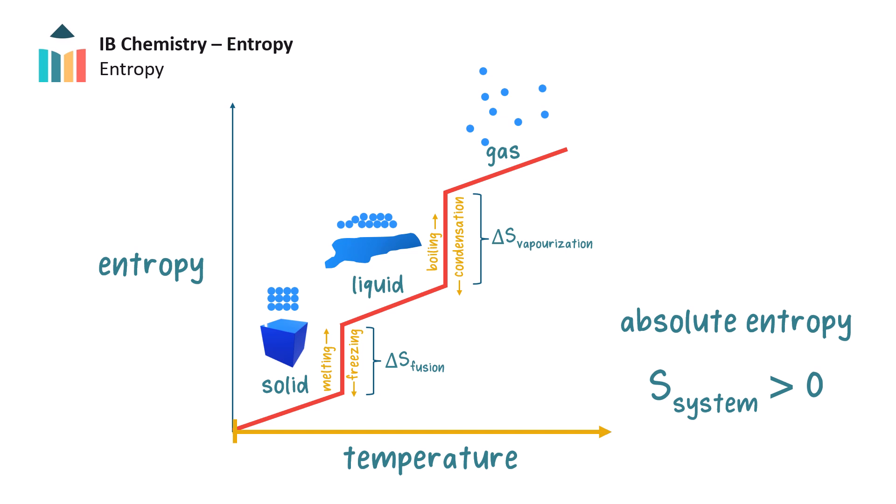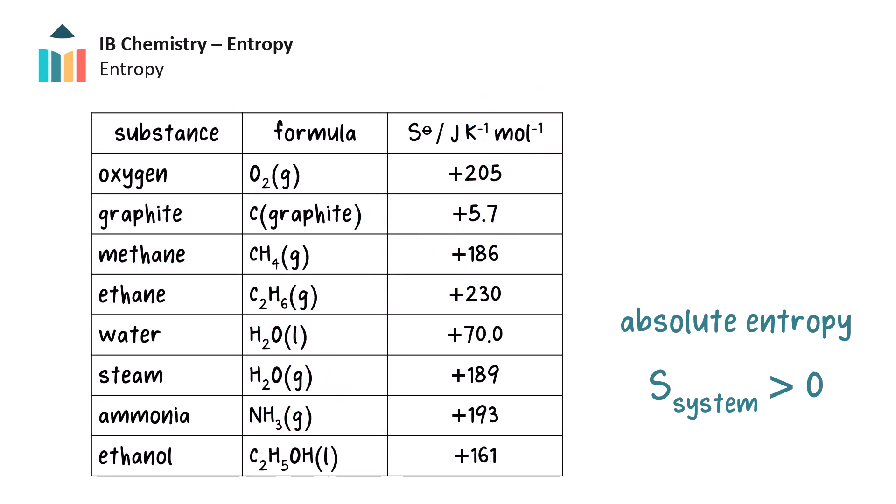Standard absolute entropy values of various substances, that is, the molar entropy of substances in their standard states, can be found in tables. Here are some standard entropies for certain substances. Notice, again, all values are positive. The value for gaseous water is higher than the value for liquid water, as expected. The units of entropy are usually expressed in joules per kelvin per mole.